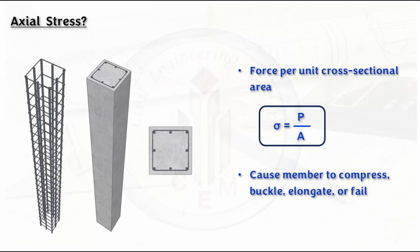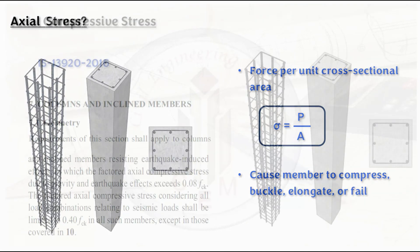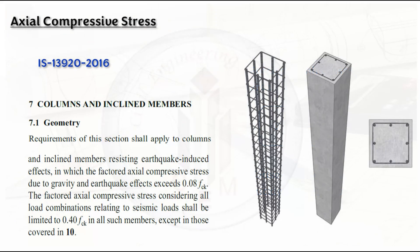The formula for axial compressive stress is: σ = Force / Area, or Load / Area. This axial compressive stress can cause the member to compress, buckle, elongate, or fracture. It is therefore important to design the column to withstand the expected axial compressive load within the permissible limit as per IS code.